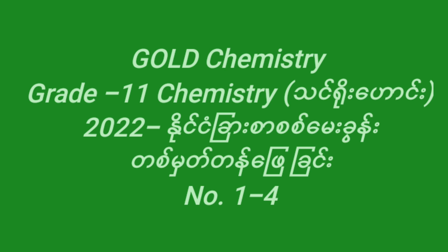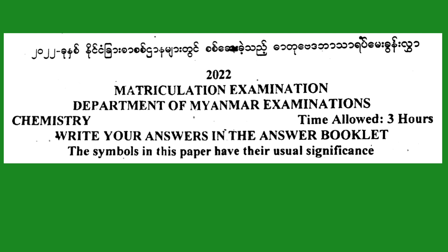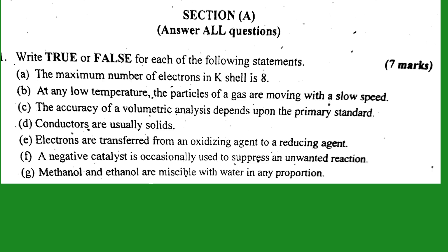Hello everybody, welcome to Grade 11 chemistry. I'm ready to give answers for you. Number one: write true or false for each of the following statements. Part A: the maximum number of electrons in K shell is 8.